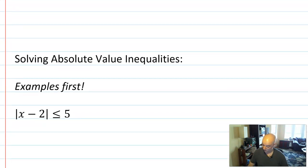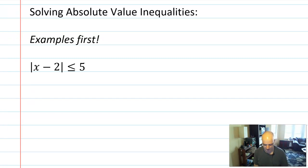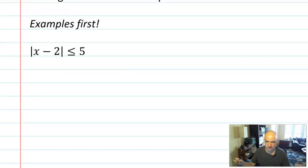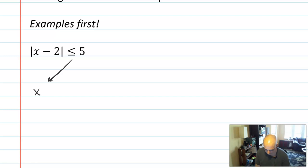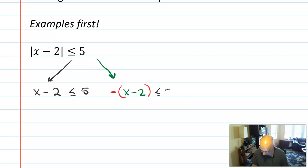Now I want to get into the meat of this video: solving absolute value inequalities. I want to teach this by example — do a couple problems, then talk about the theory and the differences between them. Our first example is: absolute value of x minus 2 is less than or equal to 5. I'm going to solve it using the same method used for absolute value equations. We split it into two cases. Case 1: delete the absolute value and change nothing else. Case 2: delete the absolute value, put parentheses around x minus 2, and make it negative, keeping the inequality less than or equal to 5.